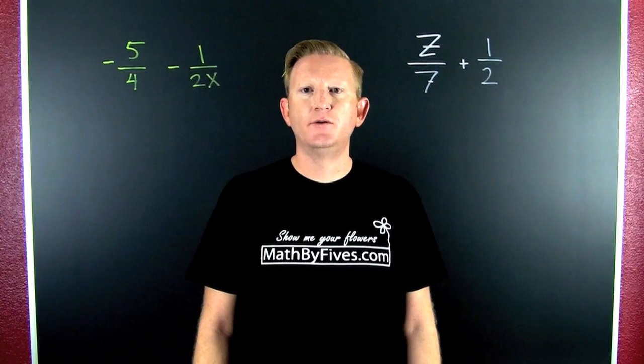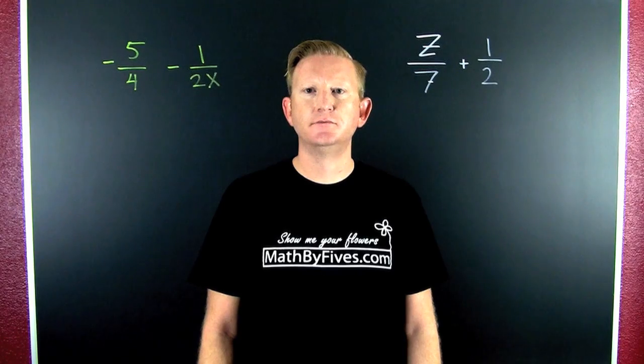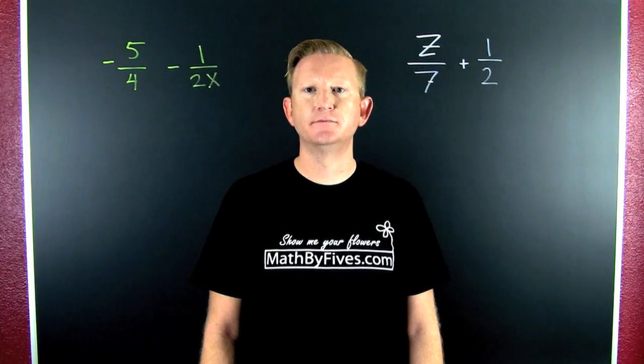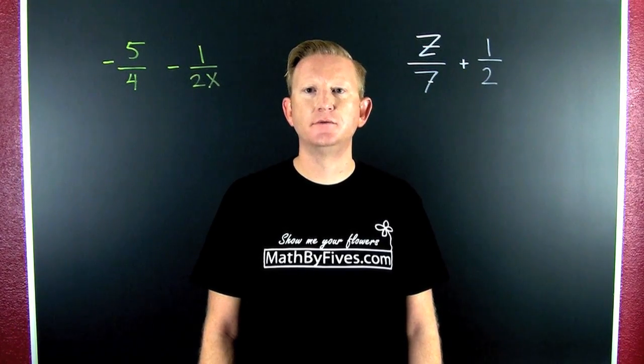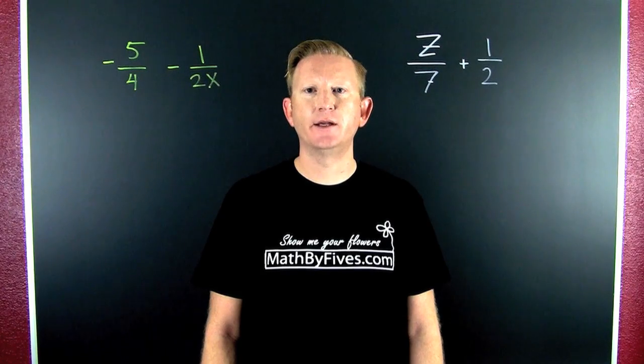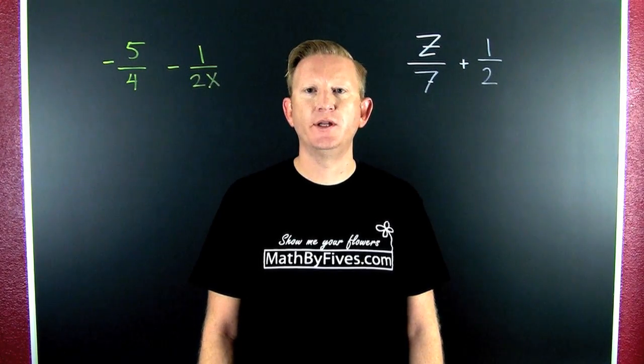Let's add rational expressions with unlike denominators. In order to do that, we're going to need to get a common denominator. So then, we need an example.